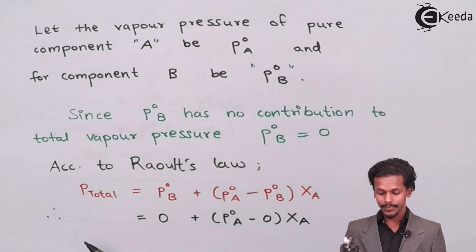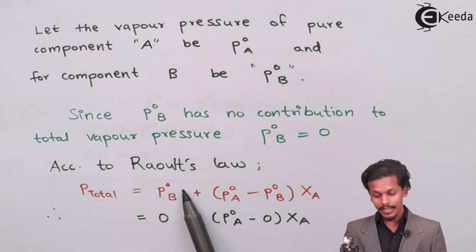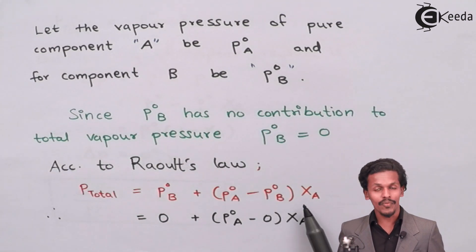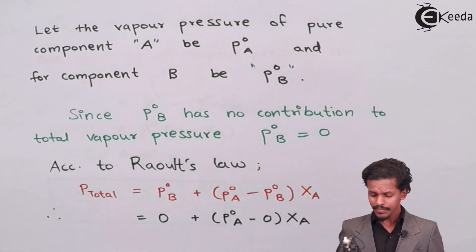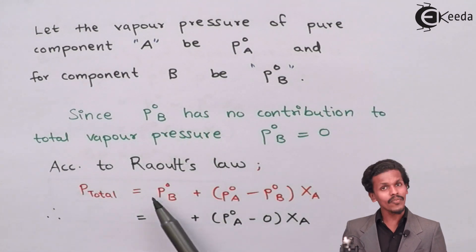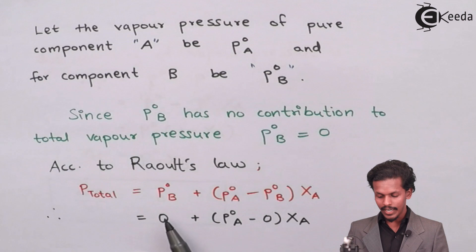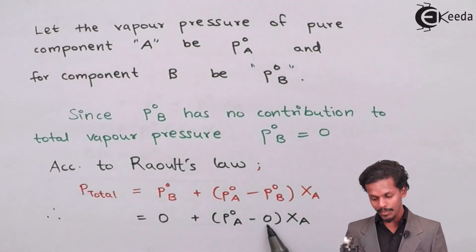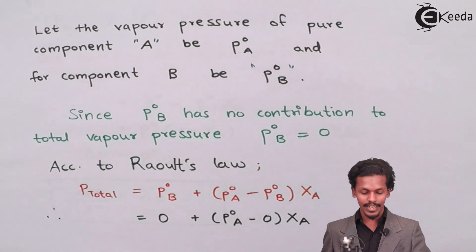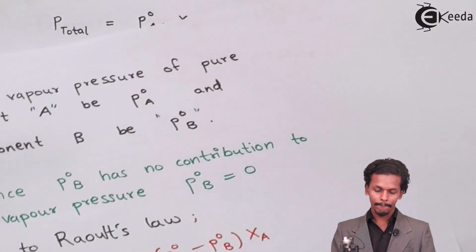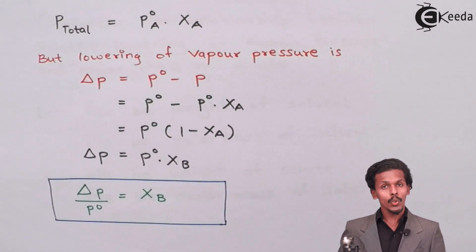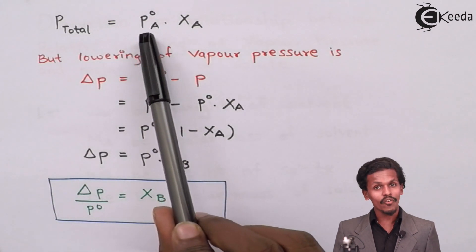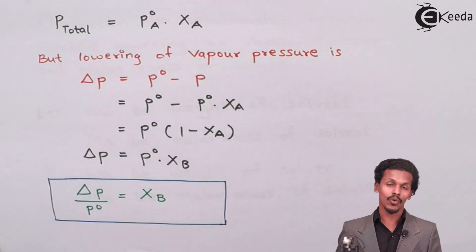Therefore, according to Raoult's law, the total vapor pressure equals P0B plus (P0A minus P0B) times XA, where XA is the mole fraction of the pure solvent. Since P0B has no contribution, I substitute P0B as zero. The final equation becomes: the total vapor pressure of the solution is the product of the vapor pressure of pure solvent P0A and the mole fraction of the pure solvent XA.